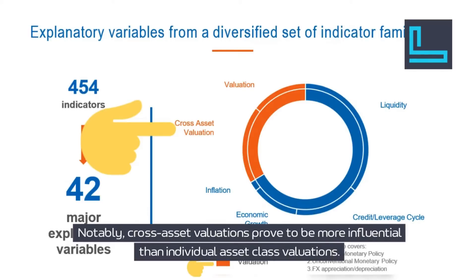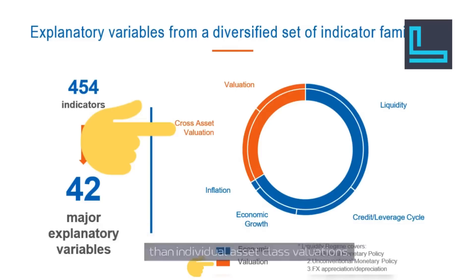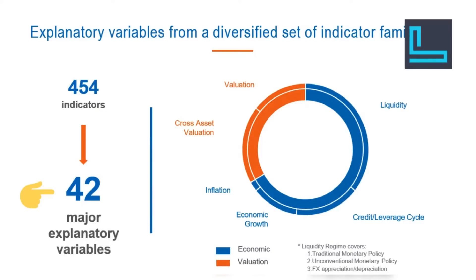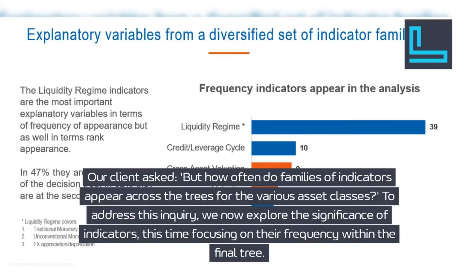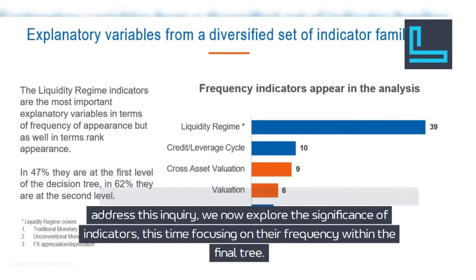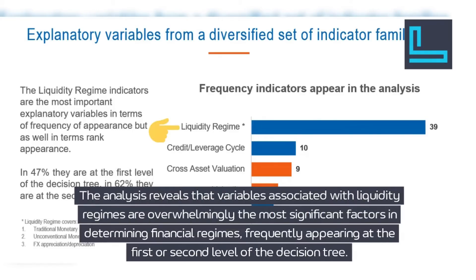Notably, cross-asset valuations prove to be more influential than individual asset class valuations. From the initial pool of 454 indicators, we successfully eliminate 412 variables, as the parsimonious trees retain 42 variables to elucidate the relative behavior of 17 asset classes. Our client asked: how often do families of indicators appear across the trees for the various asset classes? The analysis reveals that variables associated with liquidity regimes are overwhelmingly the most significant factors in determining financial regimes, frequently appearing at the first or second level of the decision tree.